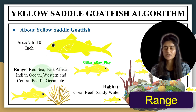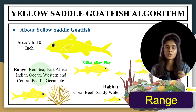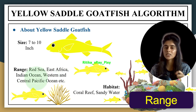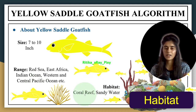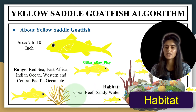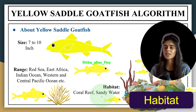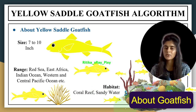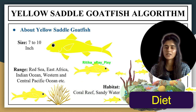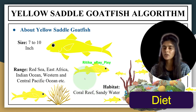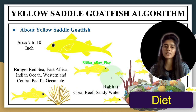Yellow saddle goatfish are native to Indo-Pacific regions including the Red Sea, East Africa, Indian Ocean, and the Central Pacific Ocean. They prefer living in coral reef environments and are commonly found in shallow or sandy water near the reef. In the wild they eat small fishes and other organisms, and in captivity they are kept in salt water and fed high quality flakes or frozen and live food.